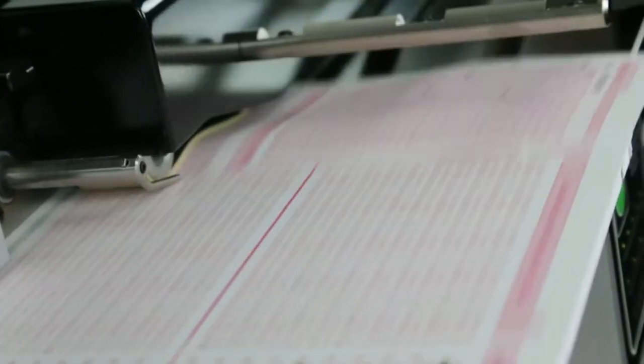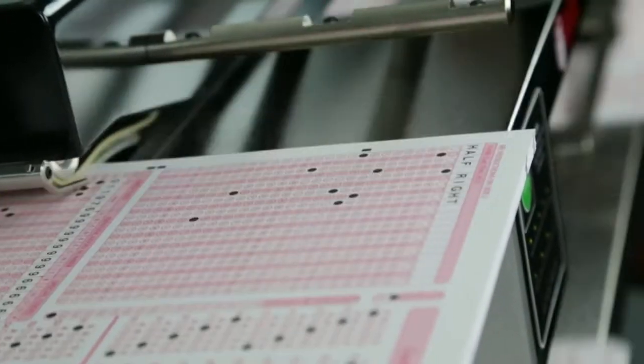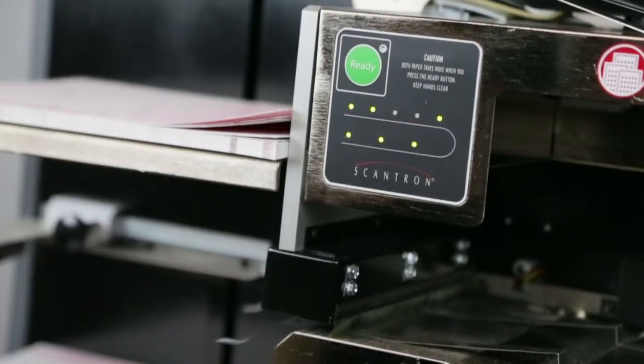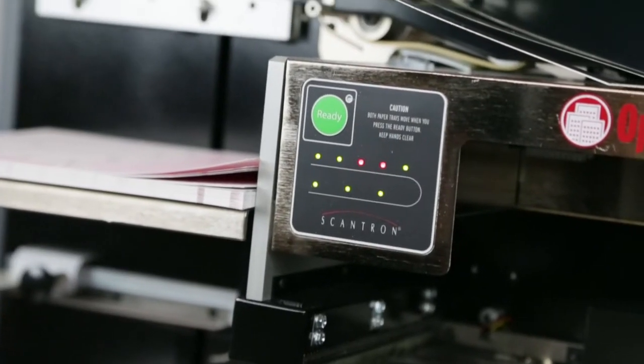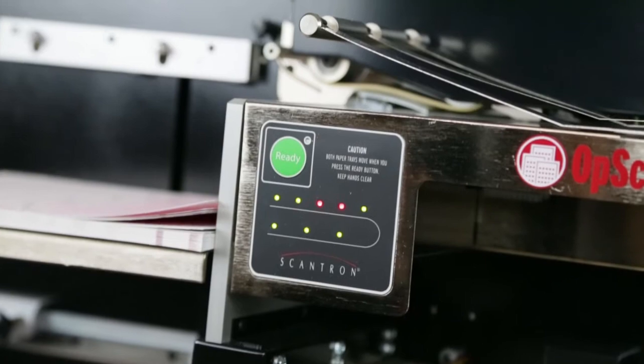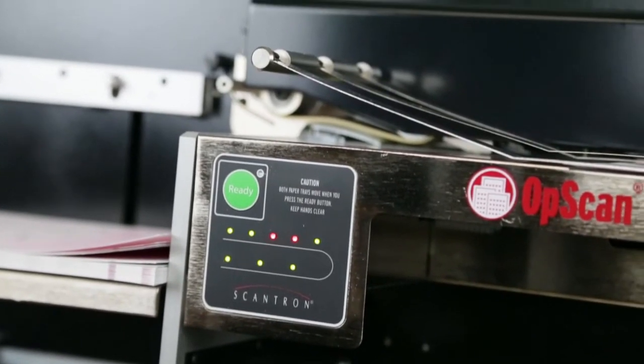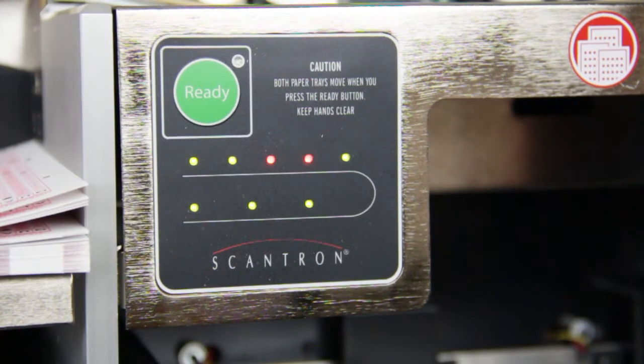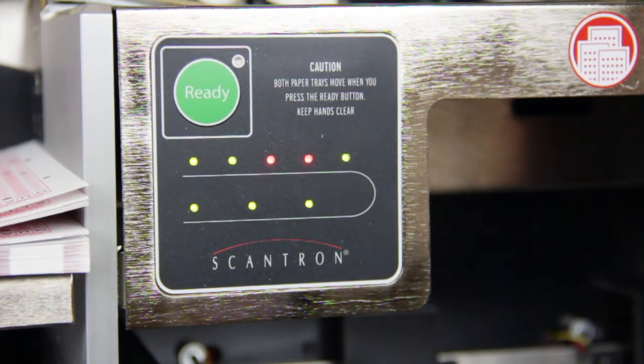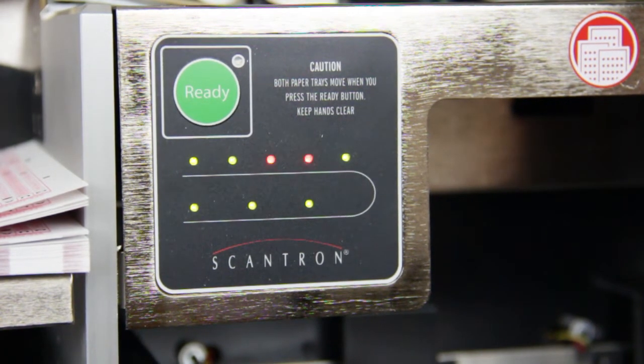The open feed path design makes clearing obstructions fast and easy. An LED indicator panel also shows each of the sensors around the paper path. If there's paper along the path, the indicator will flash red so you can take immediate action to maintain continuous scanning.